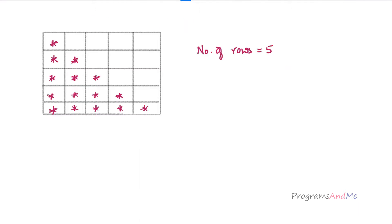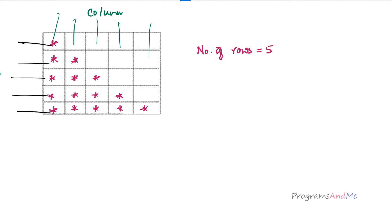We can visualize this pattern within a matrix or array. Here we can see we are printing stars in different rows and columns — these are the rows and these are the columns. We are printing stars at different row and column positions, and in our program we are asking the user to enter the number of rows they want in the output.